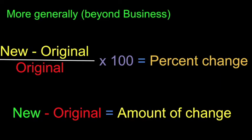Outside of the business world, looking at the rest of the universe, the general equation for percent change is very similar. New minus original, divided by original, times 100 gives you a percent of change. Or, another way to look at it: the amount something changed divided by its starting value times 100 gives percent change.